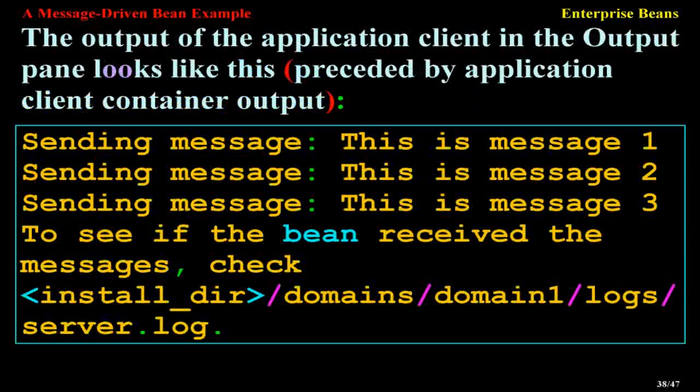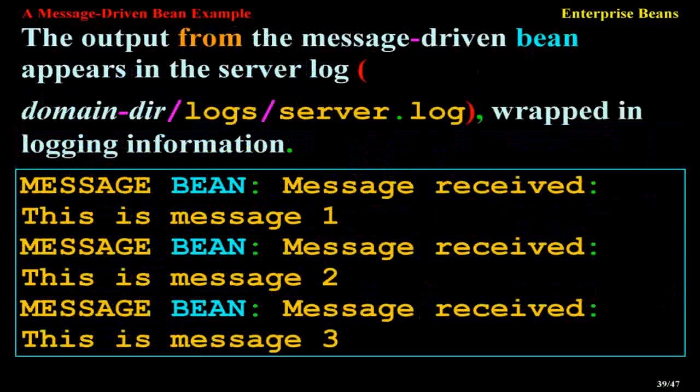The output of the application client in the output pane looks like this, preceded by application client container output: 'Sending message: This is message 1', 'Sending message: This is message 2', 'Sending message: This is message 3'. To see if the bean received the messages, check the server log at install-dir/domains/domain1/logs/server.log.